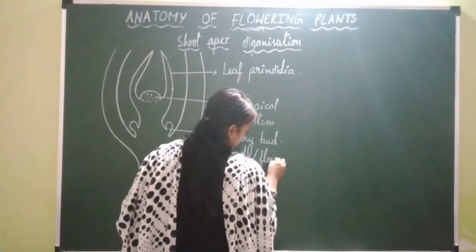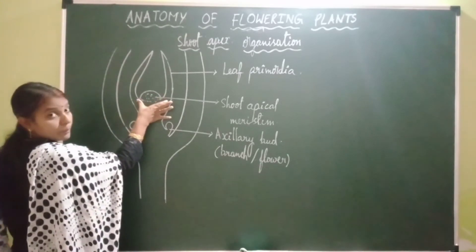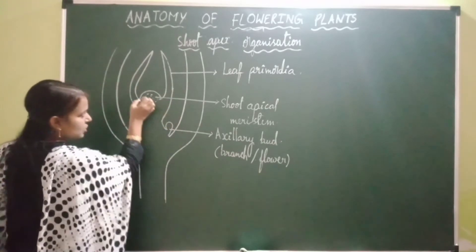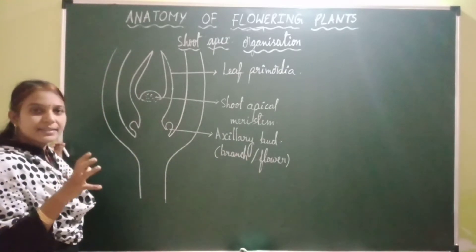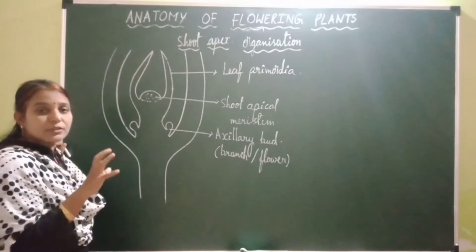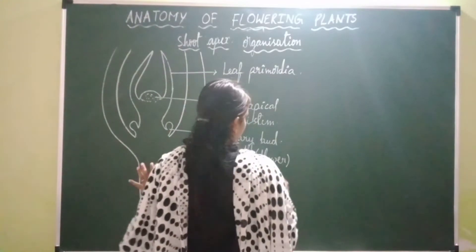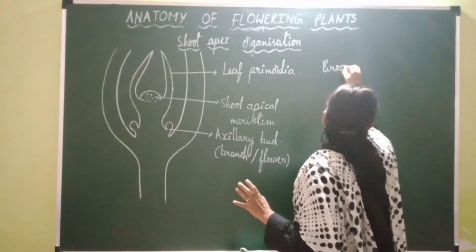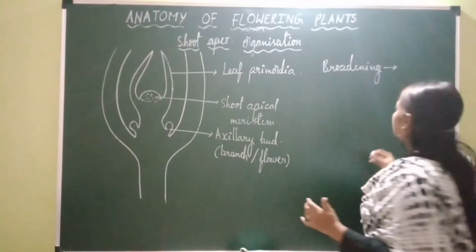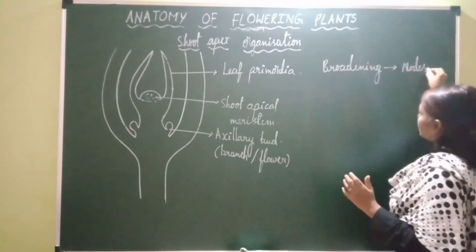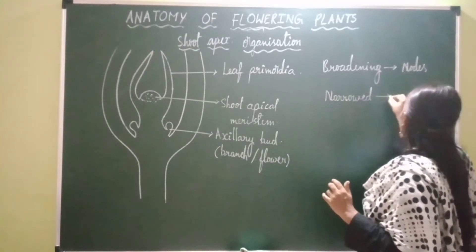The apical meristem shows broadening at some regions and narrowing at other regions. The active vegetative meristematic cells show this alternating pattern. The regions showing broadening develop into nodes, and the narrowed regions develop into internodes.